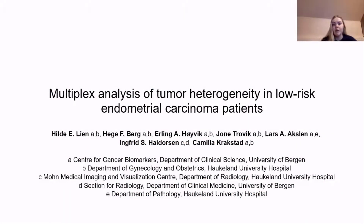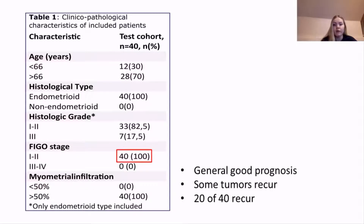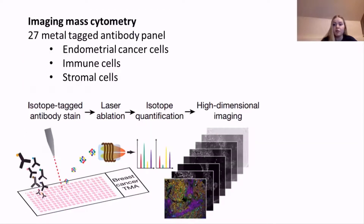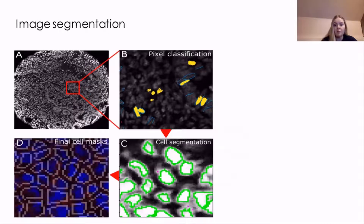I'm Hilde Lien and I'm a PhD candidate in the Ballian Gynecological Cancer Group. In this project, I focus on endometrial cancer samples from patients with a low FIGO stage. Most of these patients have a good prognosis but some recur. In this dataset of 40 samples, 20 tumors recurred. In order to investigate the different outcomes, we use imaging mass cytometry to look at tumor heterogeneity by investigating 27 biomarkers simultaneously. To get the single cell data, we need to segment the images, and this is done by first classifying the pixels into three classes — nuclei, cytoplasm, and background — using a random forest classifier.